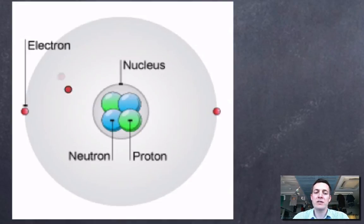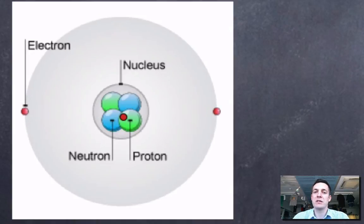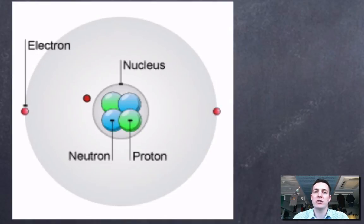Now this region of space might have a shape, but just because we describe it as being a circle that doesn't mean that the electrons always follow this circular path. What we're saying here is that the electron shell is just a region of space where you're likely to find an electron. So the electron could be anywhere in this area.